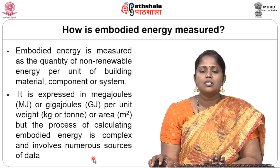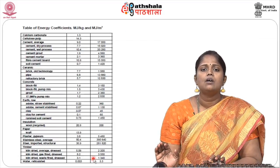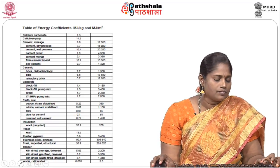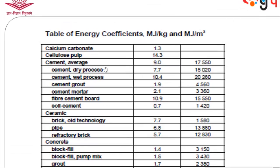Embodied energy is complex and involves numerous sources of data for any simple material. Now look at this chart — these are various materials used in the building industries and their energy coefficient in terms of mega joules per kilogram. And for one cubic meter usage of this material, how much energy coefficient we are consuming, shown in terms of mega joules per meter cube in the second graph.